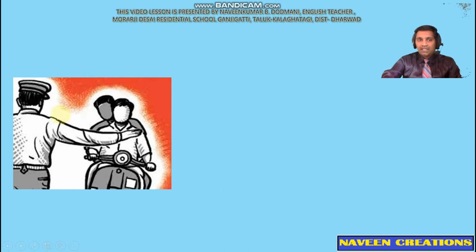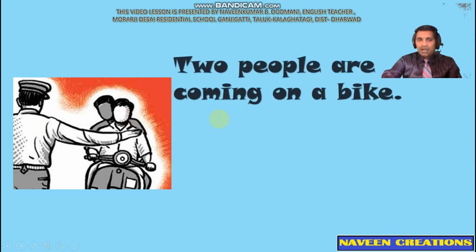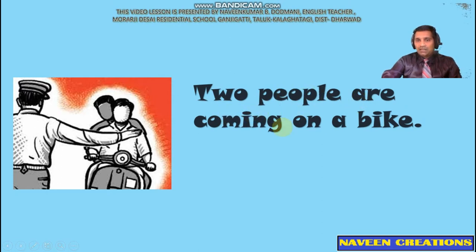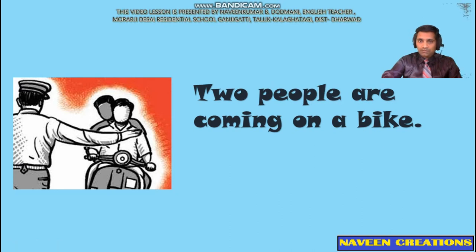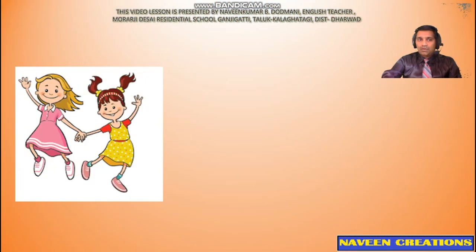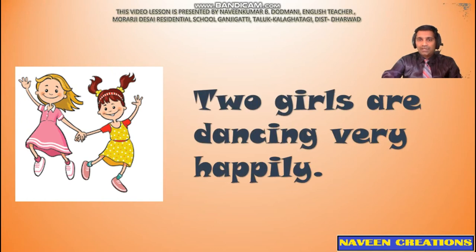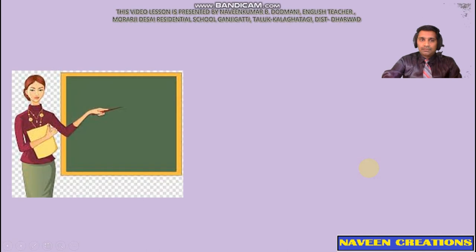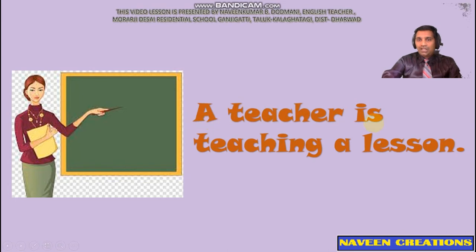In the next picture we can find a traffic policeman and two bike riders. We can make sentences like: two people are coming on a bike or scooter. A traffic policeman is stopping them. In the following picture, observe it and describe it like: two girls are dancing very happily. In the next picture we can see a teacher who is teaching something with the help of a blackboard. We can describe this as: a teacher is teaching a lesson.